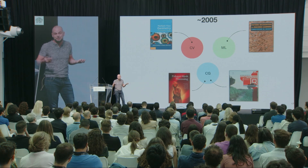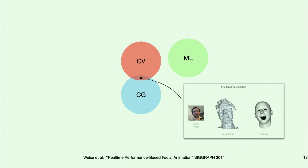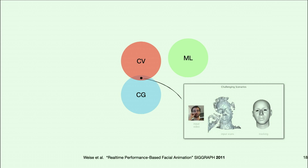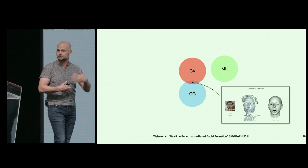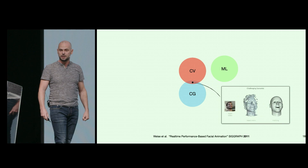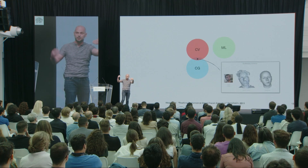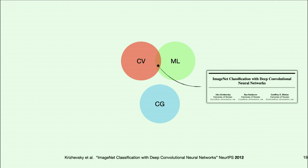An early example showing the intersection of computer vision and computer graphics: face tracking. Much better tracking results were possible once computer graphics 3D models were used to track depth images from sensors and transfer performances to digital models. Then in 2012, we had the bigger evolution of deep learning — probably the paper that is the reason everyone is here today. The key result was the ability to interpret image content with machine learning tools and beat the performance of classical methods.